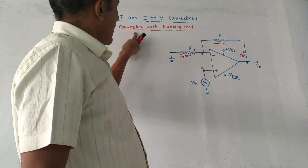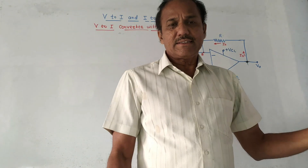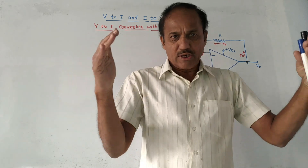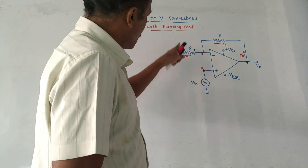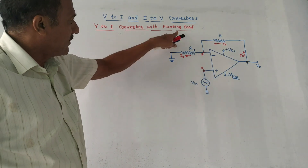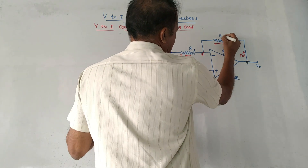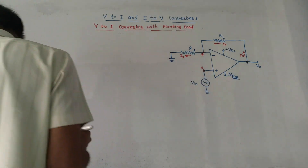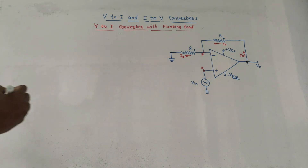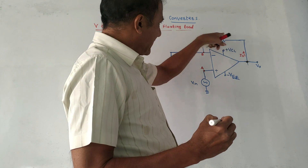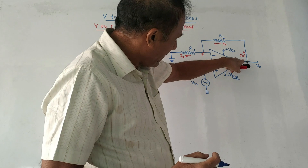Next type is V to I converter with floating load. Floating load means the load is not connected to ground as in the earlier diagram. This is the circuit diagram for V to I converter with floating load. The load resistance RL is not connected to ground; rather, it is connected in the feedback path, and the output terminal provides the feedback.